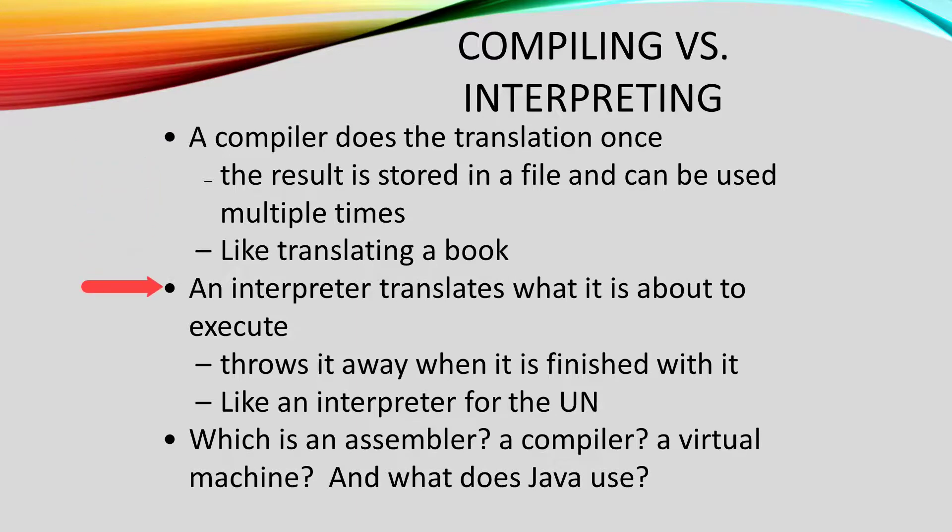The other strategy for translation is called interpreting. An interpreter translates each instruction when it needs to execute it, and throws that translation away after it executes. In other words, it's translating on the fly. This is like a language interpreter for the UN. In the Java world, we use both of these. The compiler translates our source code into Java bytecode once. But the Java Virtual Machine translates Java bytecode on the fly. It is an interpreter.